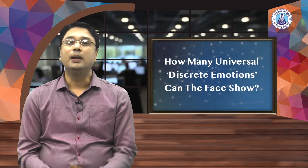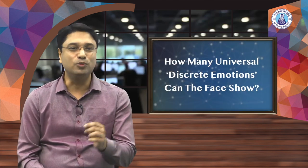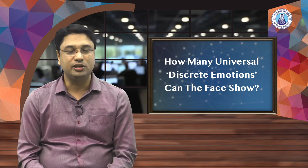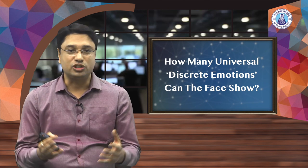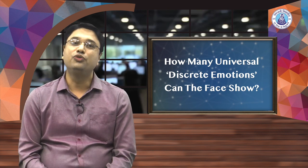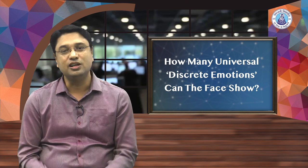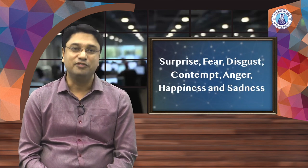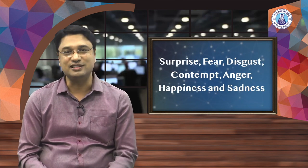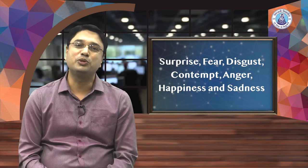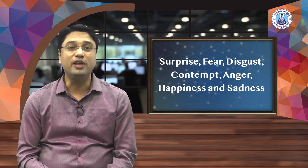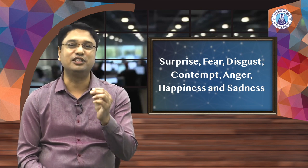How many universal discrete emotions can the face show? Putting together the works of Charles Darwin, Duchesne, Ernst Huber, Robert Plutchik, and Sylvan Tompkins, two famous researchers — Paul Ekman and Wallace V. Friesen — found that there are seven emotions the human face can convey. They are surprise, fear, disgust, contempt, anger, happiness, and sadness. The facial expressions of these emotions are universal. However, what elicits the emotion and when that emotion is shown depends on a person's personal, social, and cultural factors.